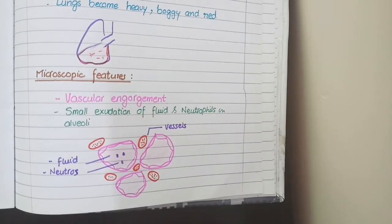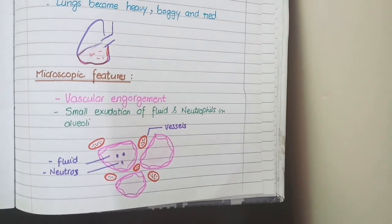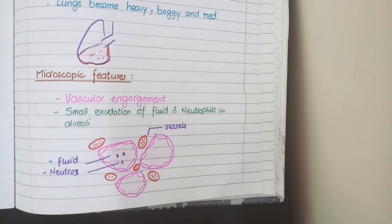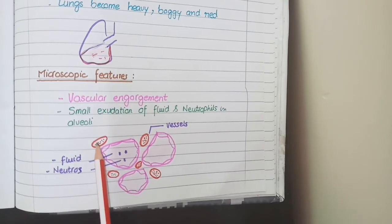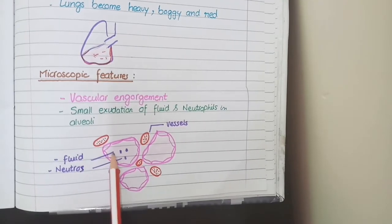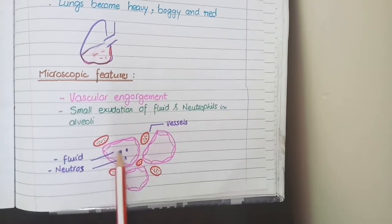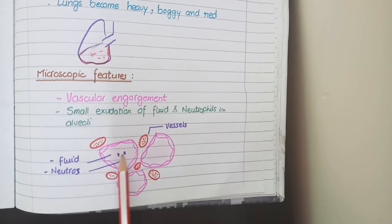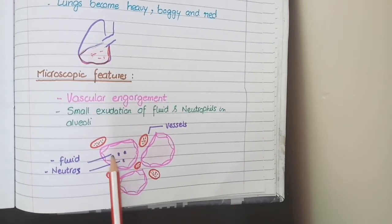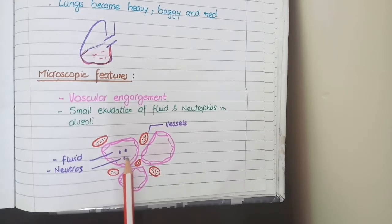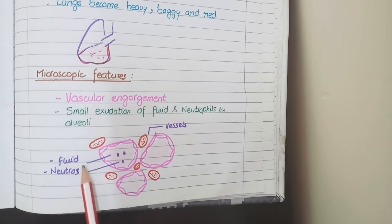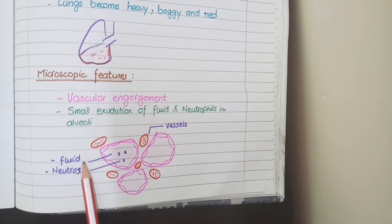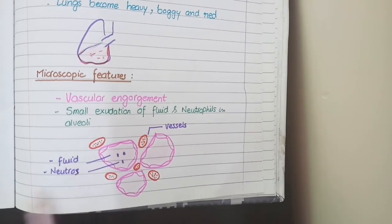At this stage, as the inflammation has just begun and congestion has just started, a small amount of fluid and neutrophils leak from these congested capillaries into the alveolar spaces. So in the alveolar spaces, you see a small amount of exudate in the form of fluid and neutrophils.